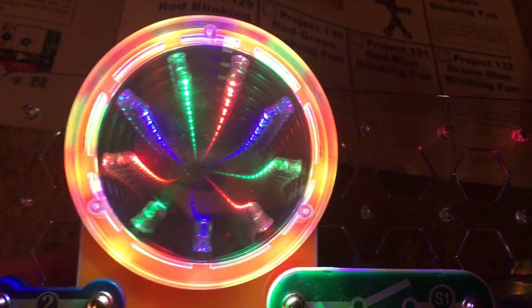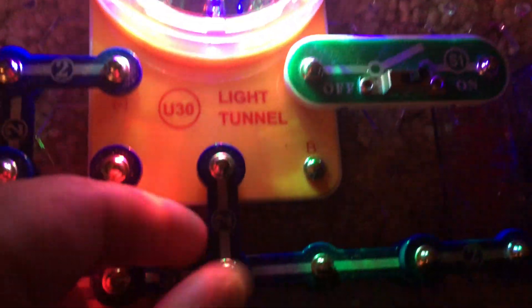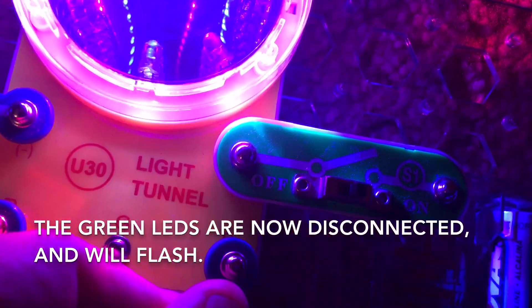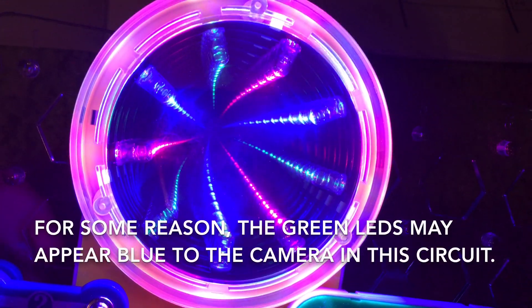Similarly, for project 128, when I remove this two snap wire from point G to point B, only the green LEDs will be blinking.